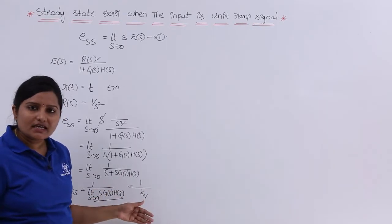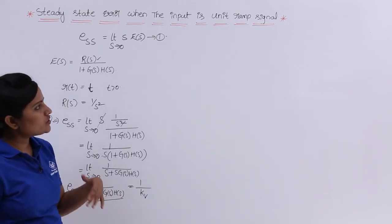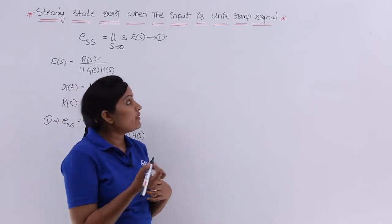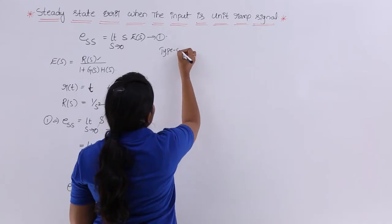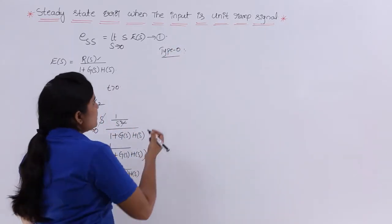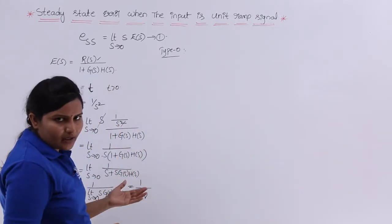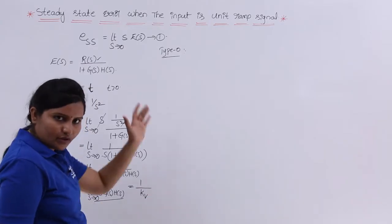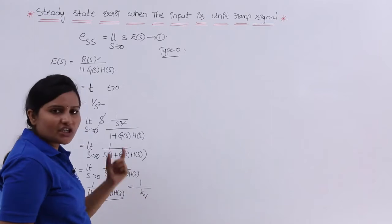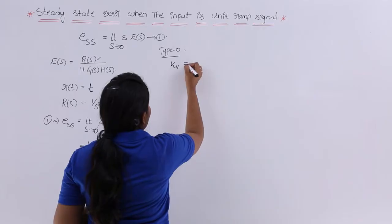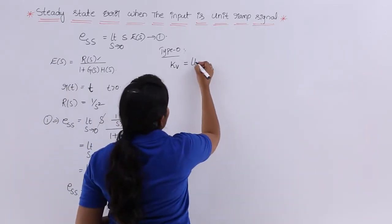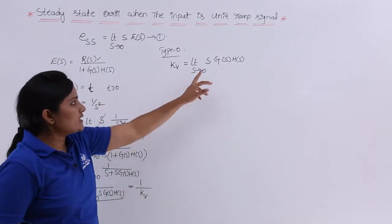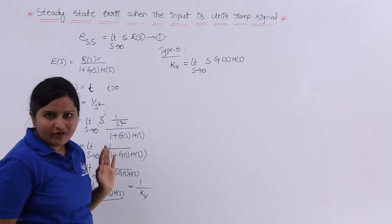If you find the velocity error constant KV, you can estimate the steady state error. This error constant is dependent upon the type of the system — the KV value depends on the type order of the system. KV is defined as: KV is equivalent to limit S tending to 0 of S into G(S) into H(S). This is the velocity error constant.